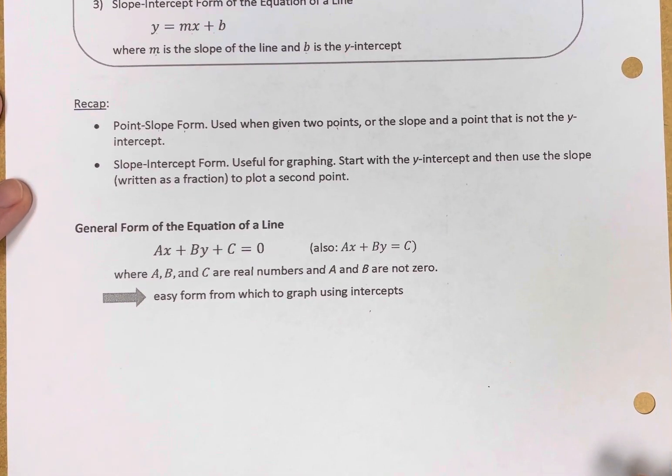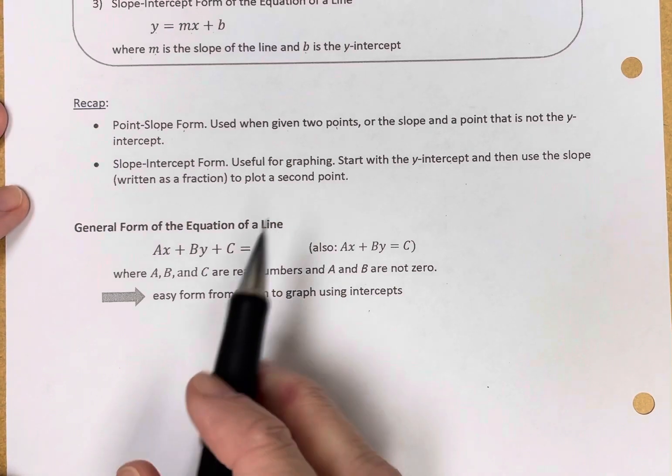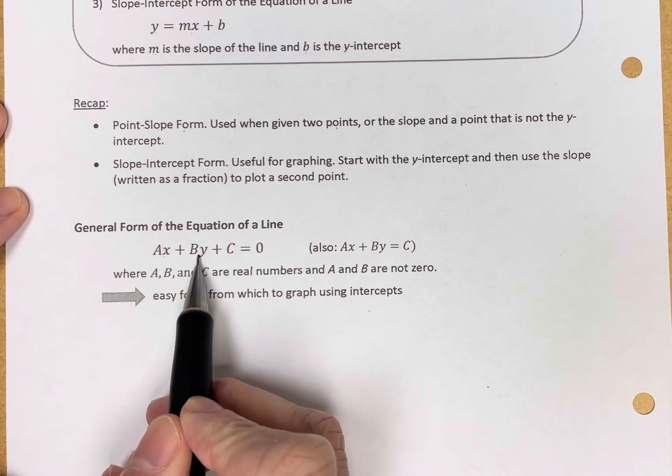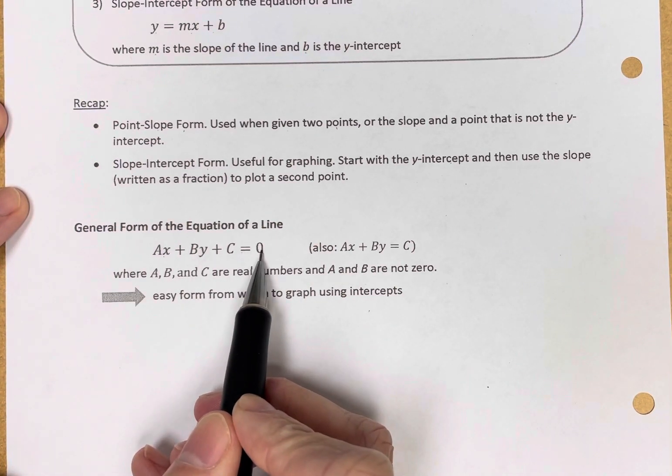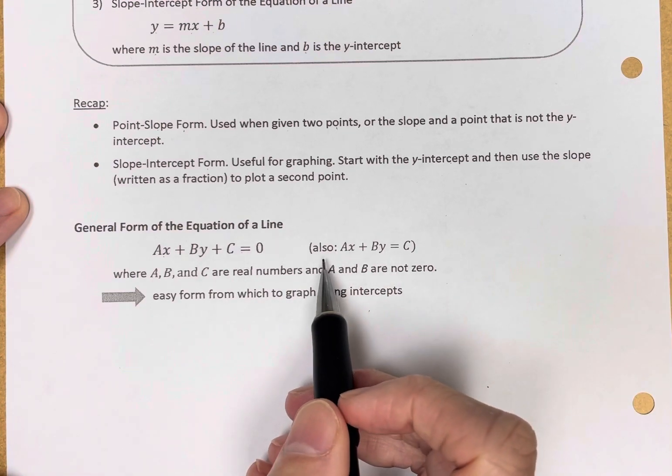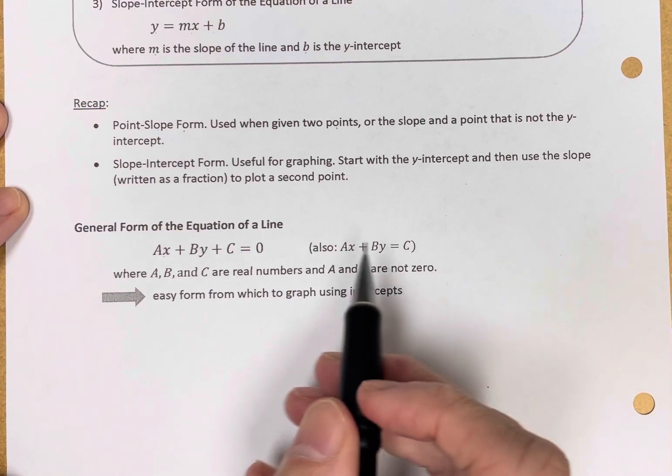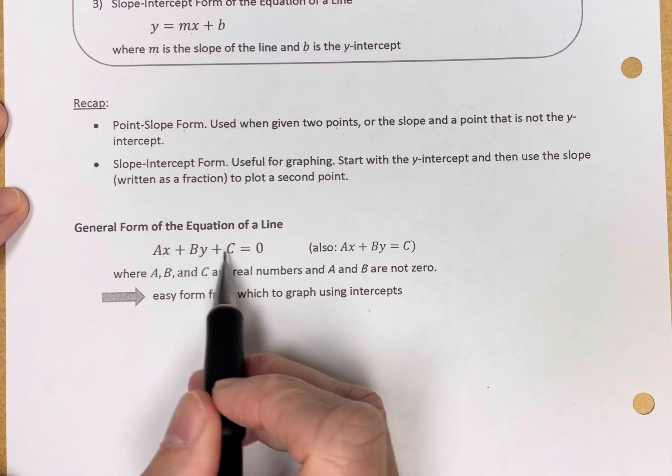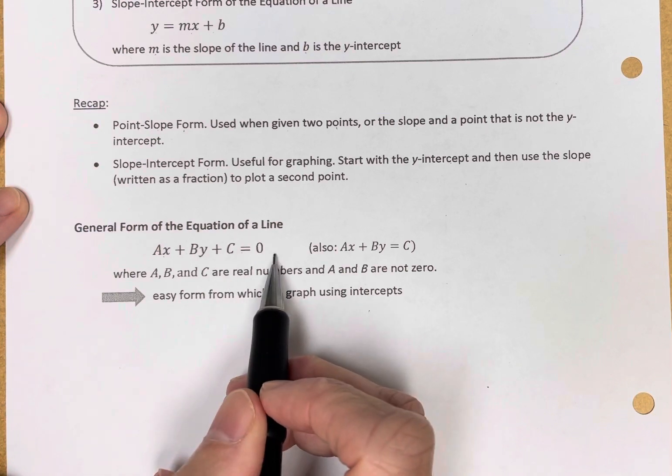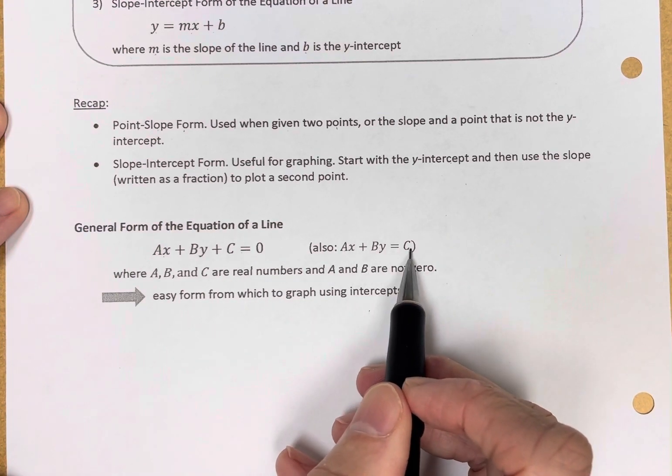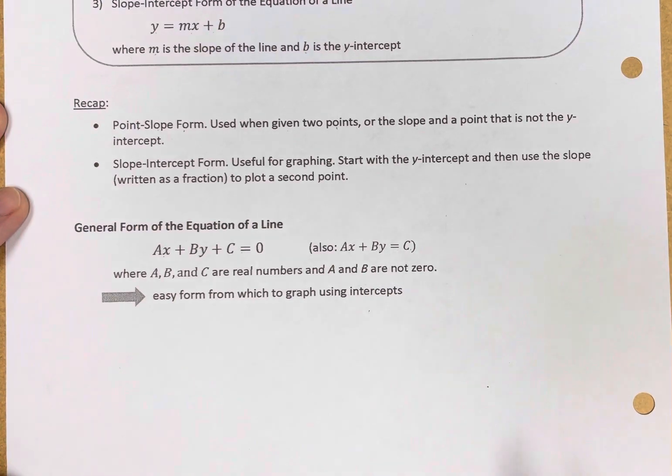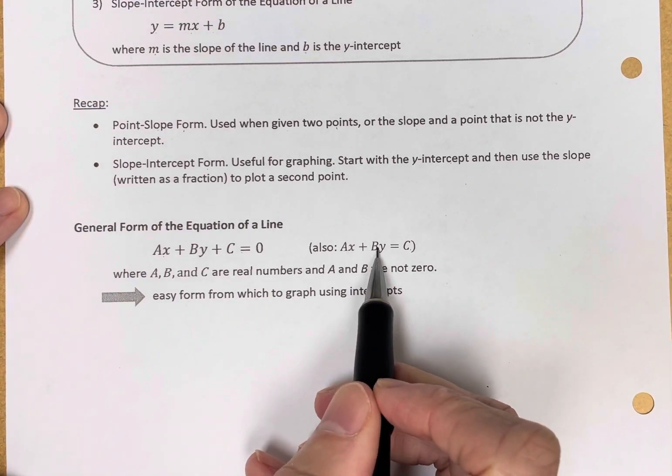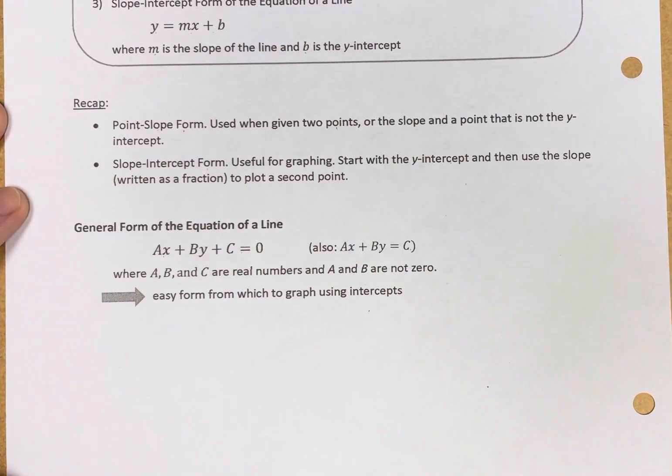So here is the general form of the equation of a line. It is Ax plus By plus C equals 0. Sometimes people also call this a general form, where they take C and move it to the right side by subtracting C from both sides. So Ax plus By equals C, you'll often see some people refer to that as the general form.